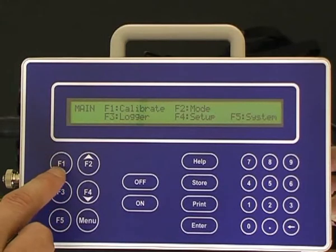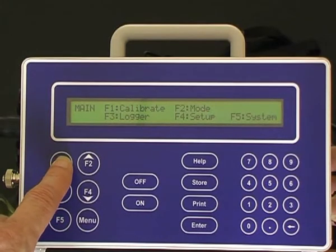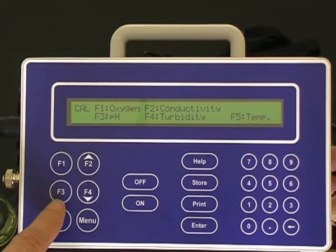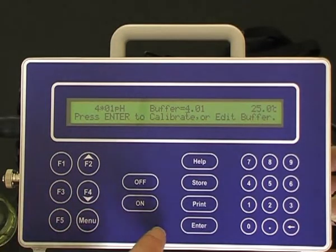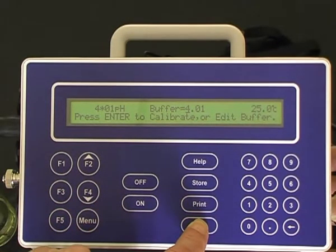To calibrate the first point of pH, press F1 for calibrate, F3 for pH. Once the pH measurement has equilibrated or settled, you then press enter to calibrate for pH buffer 4.